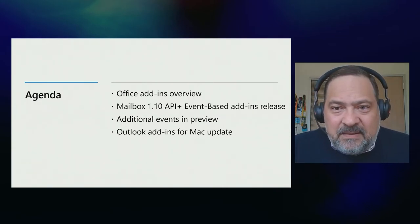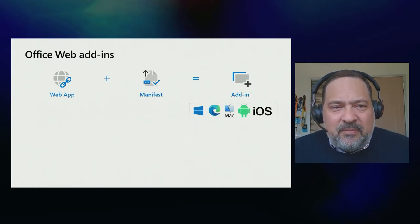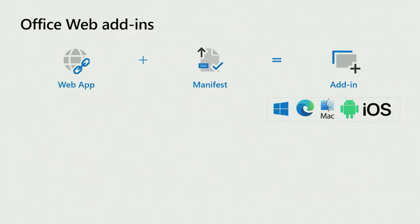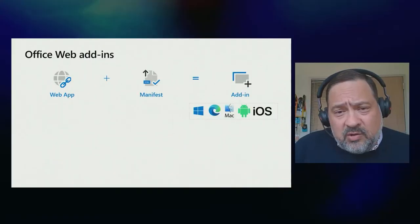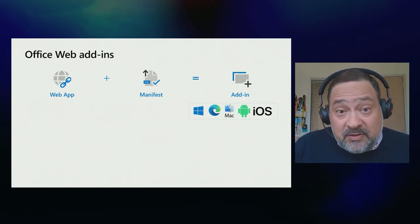I'll start by giving you a brief overview of what Office Add-ins are. An Office Add-in is an extension to Office applications — particularly in this case for Outlook. It's basically a web application that is loaded along with your Outlook application. Web Add-ins consist of a web application plus a manifest file. The beauty of web add-ins is that they are built on web technology, which means you can run them on multiple platforms. So you write your application once and it runs on Windows, on the web, in Outlook for Mac, and also on mobile devices.